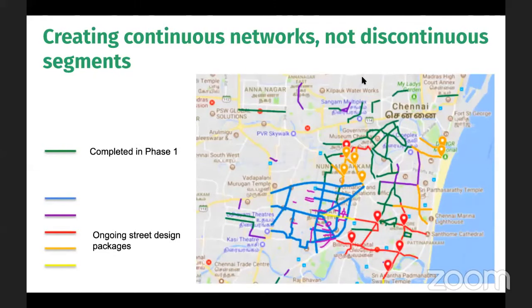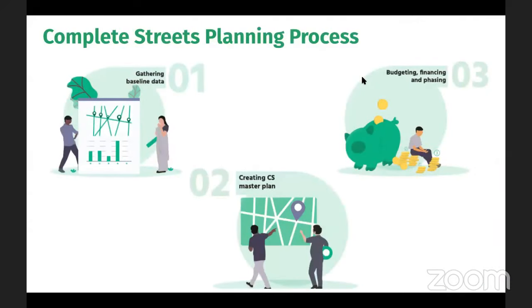Having created a policy and the right institutions, it is very important for cities to create a complete streets master plan. In the past, as we were working with cities, this picture shows streets created by the city of Chennai — streets which were implemented across the years but picked up as discontinuous segments. While the street itself was well designed, after a few hundred meters, there were other streets which were not designed. From the end user's perspective, it was not totally comprehended. Over the years the city has tried to stitch together streets and create networks, but it would be very useful to have a master plan in place from the beginning, creating packages which form continuous networks and implementing them.